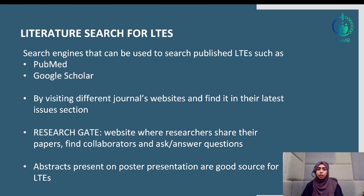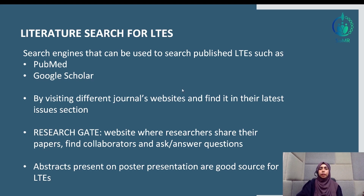For a literature search, you can go to search engines like Google Scholar or PubMed and type in your topic of interest. For example, if I want to write a letter about esophageal cancer, I can enter that into PubMed or Google Scholar and scan through all relevant articles. Or if you don't know which topic you're interested in, you can go to the websites of different journals — say, a well-known cardiology journal — and check their latest issues for recent publications and hot topics.